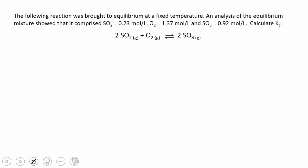Now let's try using an equilibrium expression to solve a problem. Here we have sulfur dioxide reacting with oxygen to form sulfur trioxide, and we've brought this reaction to equilibrium at a fixed temperature. We analyze the concentrations of the species involved, and we are given values for those here, and the question says to calculate Kc or Keq.